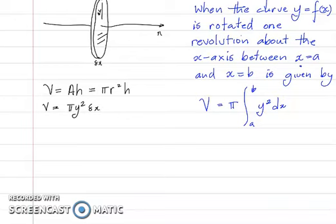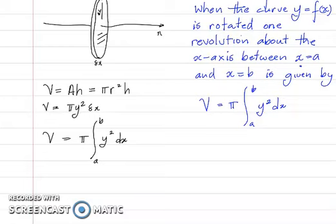So the volume of the solid generated by rotating that thin strip one revolution about the x-axis is π y² delta x. The volume for generating the entire area from a to b about the x-axis would then be V = π times the integral from a to b of y² dx. That's a rough idea of where this formula comes from. Let's have a look at an example.